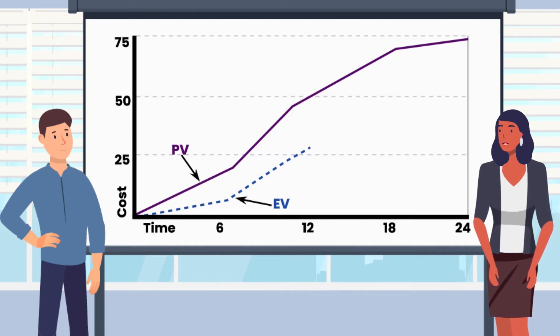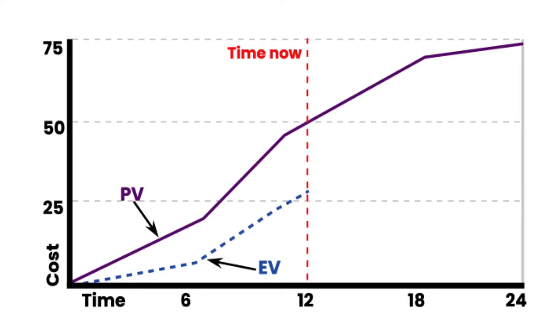The time is now 12 months since the project began. So how are we doing? It's evident we did not get as much done as planned. You're right. The EV is less than PV.